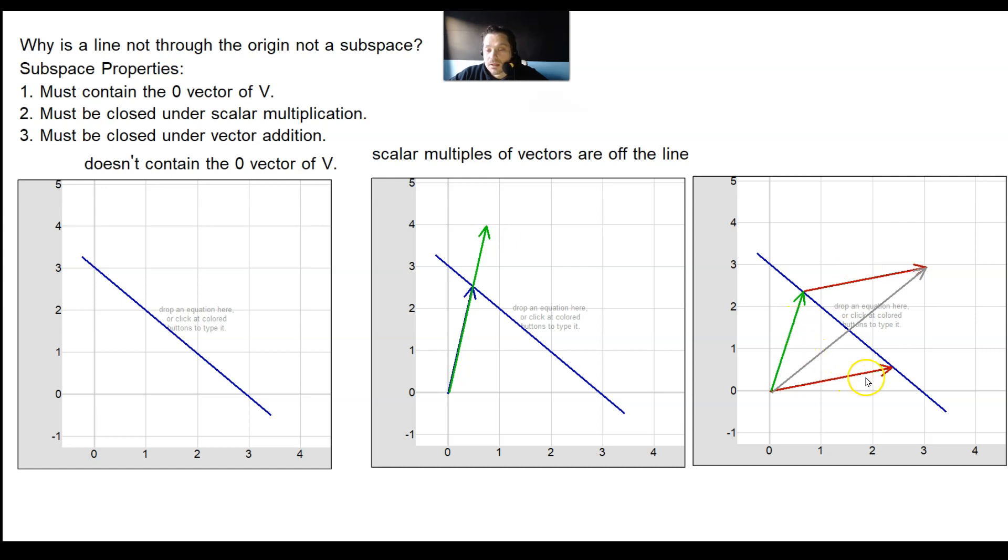The green and then the red vector, they are both on the line, but when you add them, they produce a vector that is clearly off the line. Therefore, it's not closed under vector addition. Violates closure under vector addition.